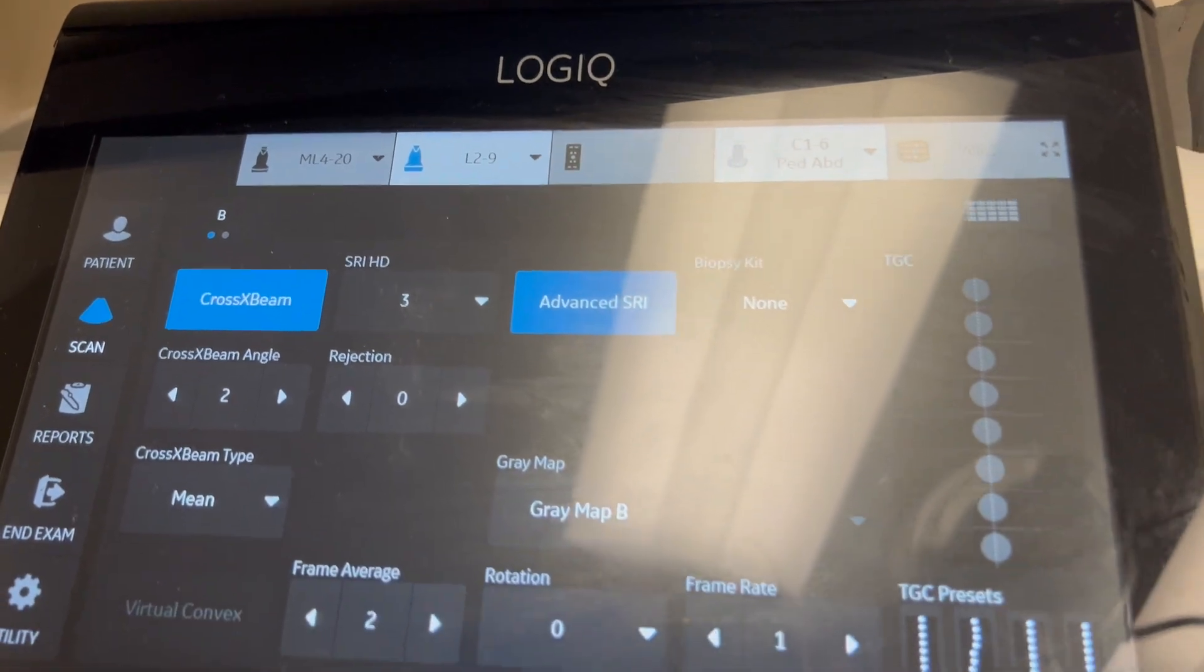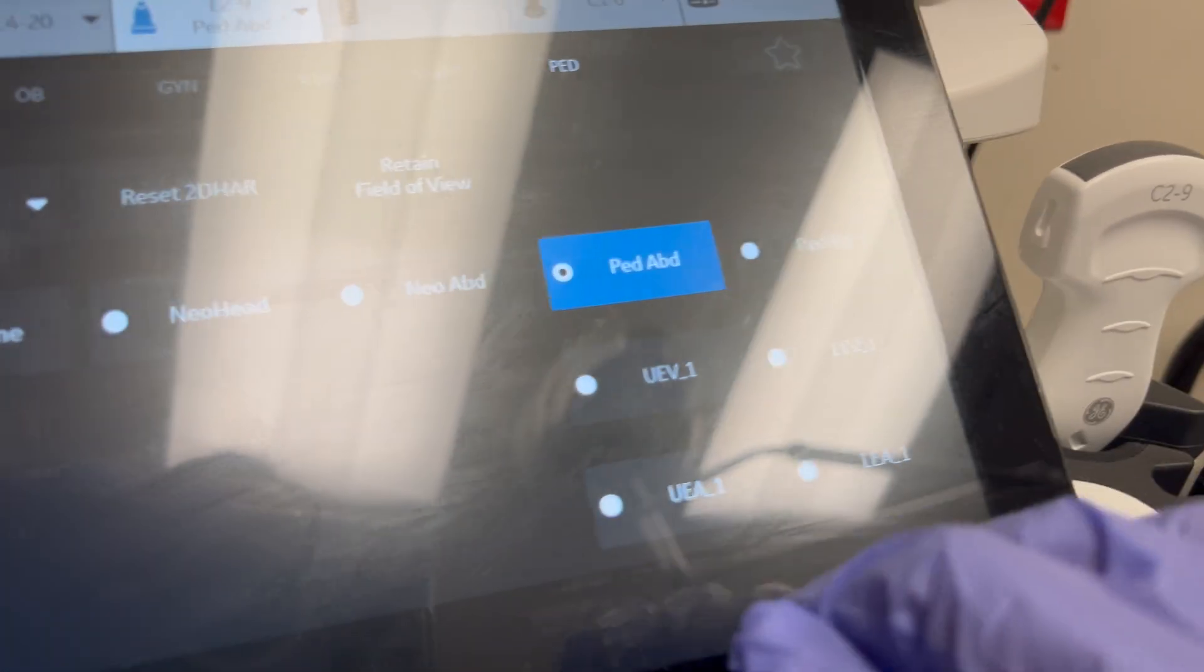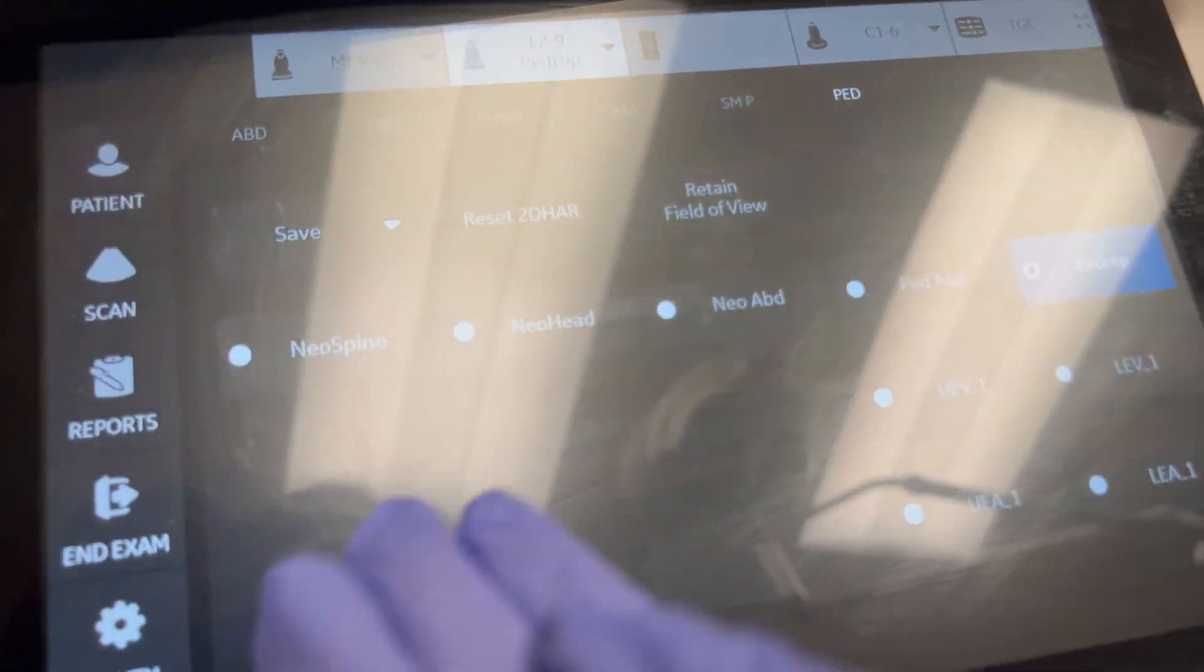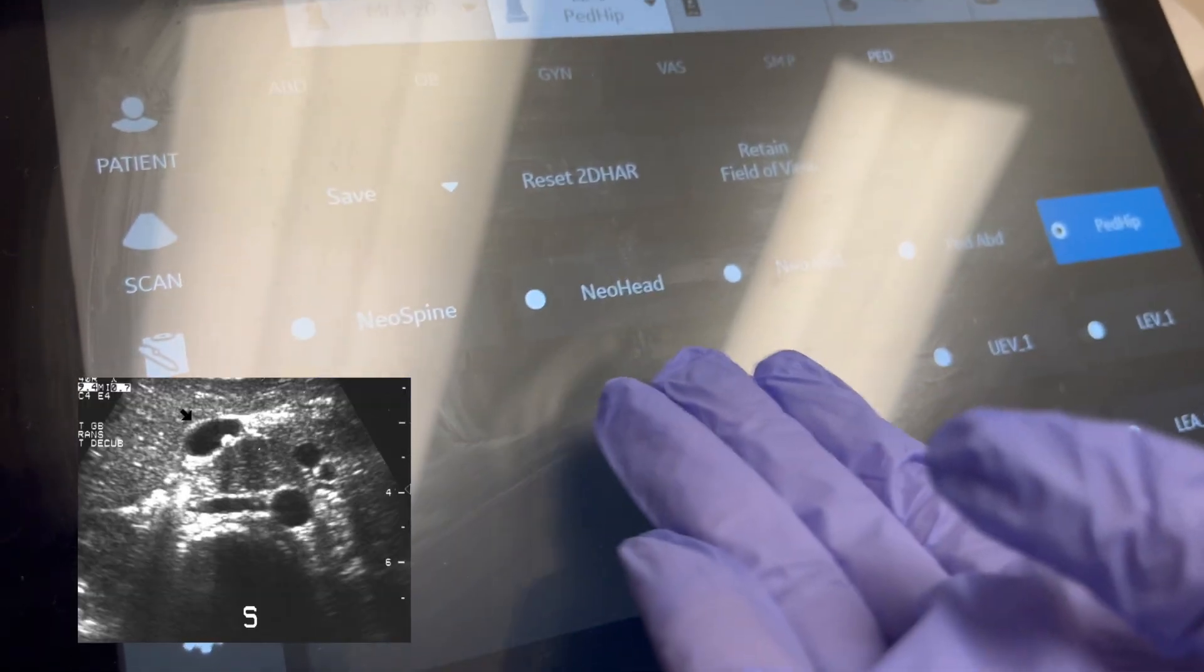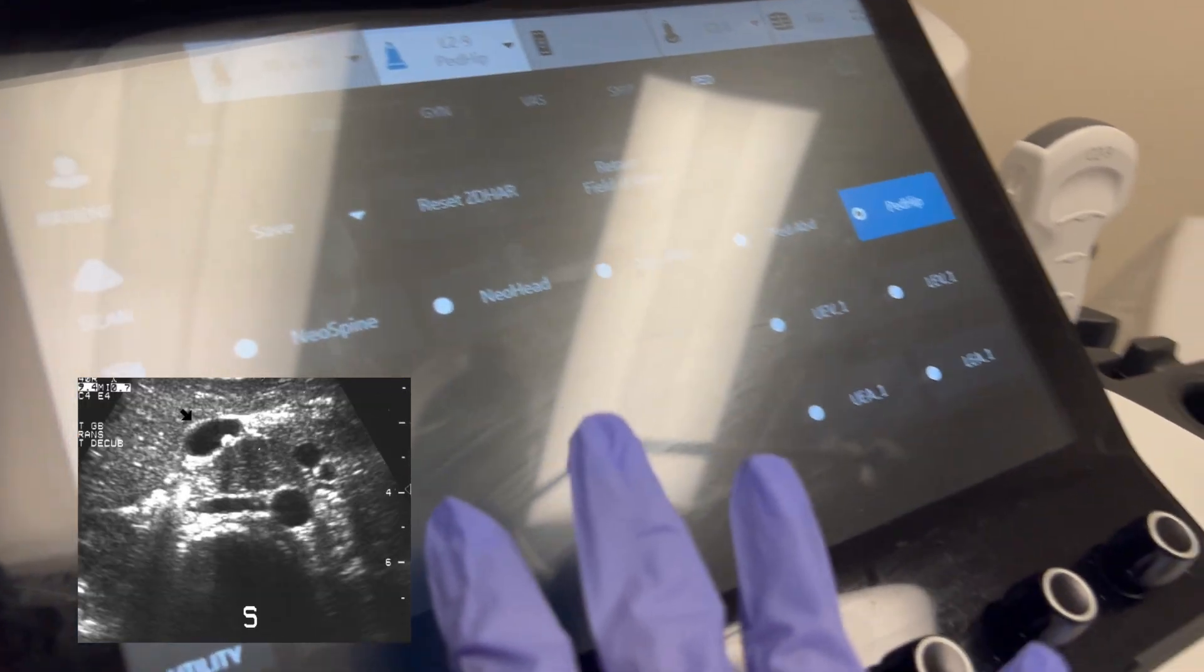If you go to the machine here you can see that you can use it on abdomens. We use it on pediatric abdomens, especially for babies, because it has a frequency that is better used for pediatric abdomens.